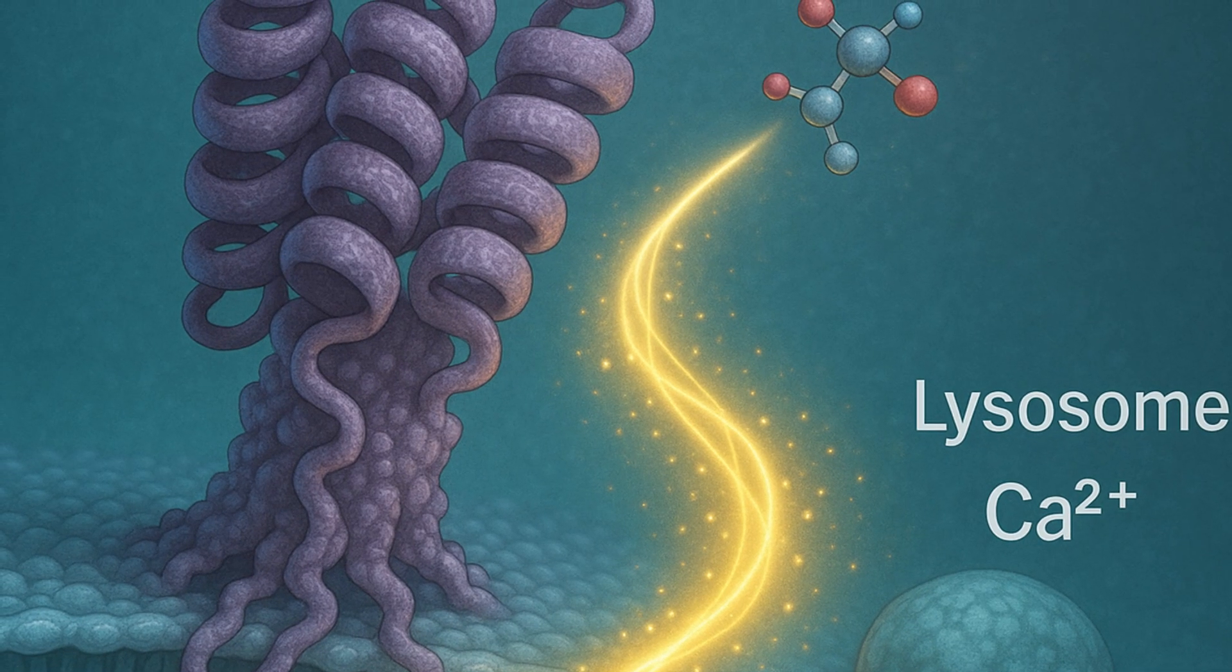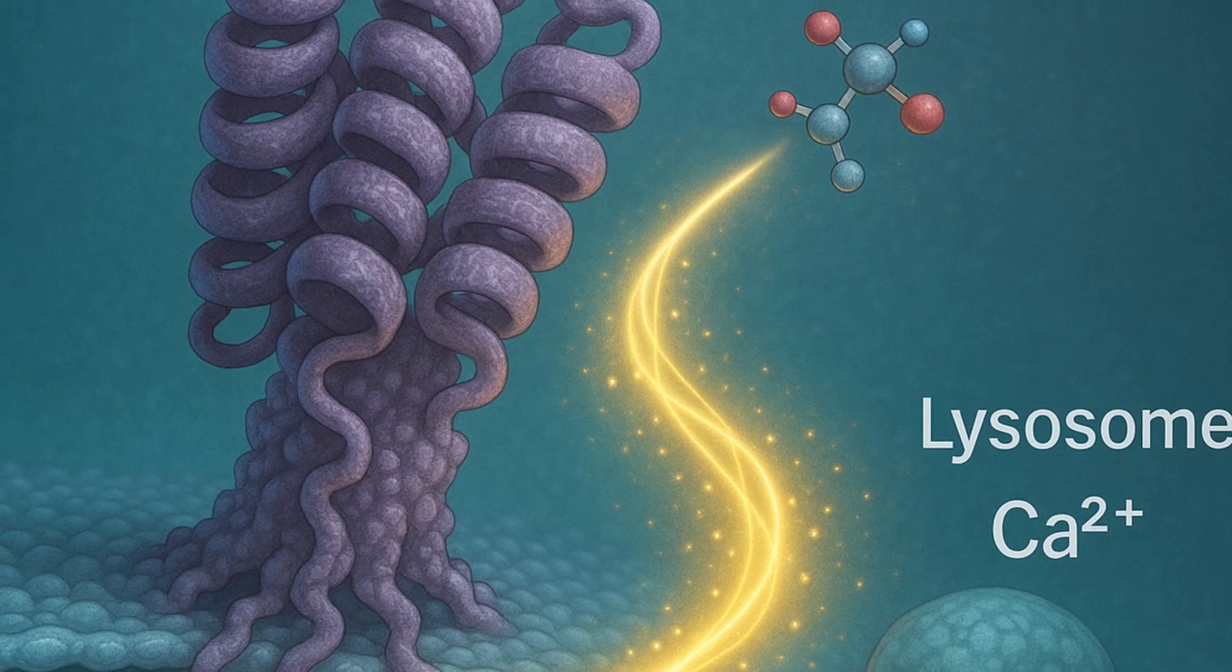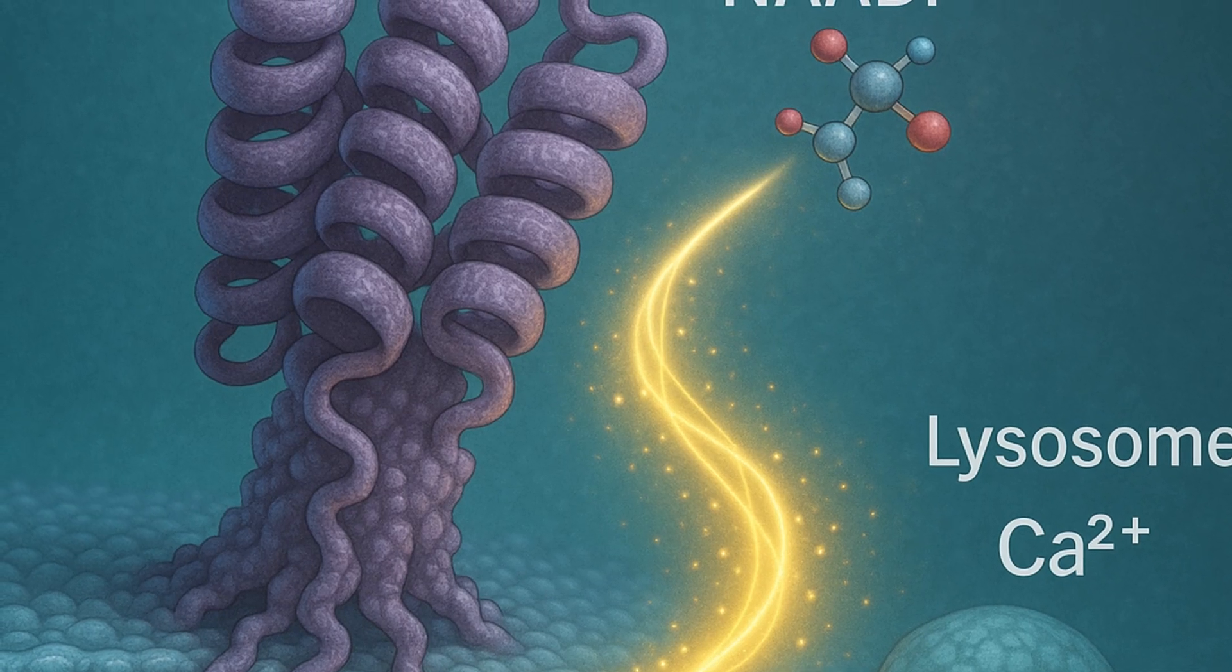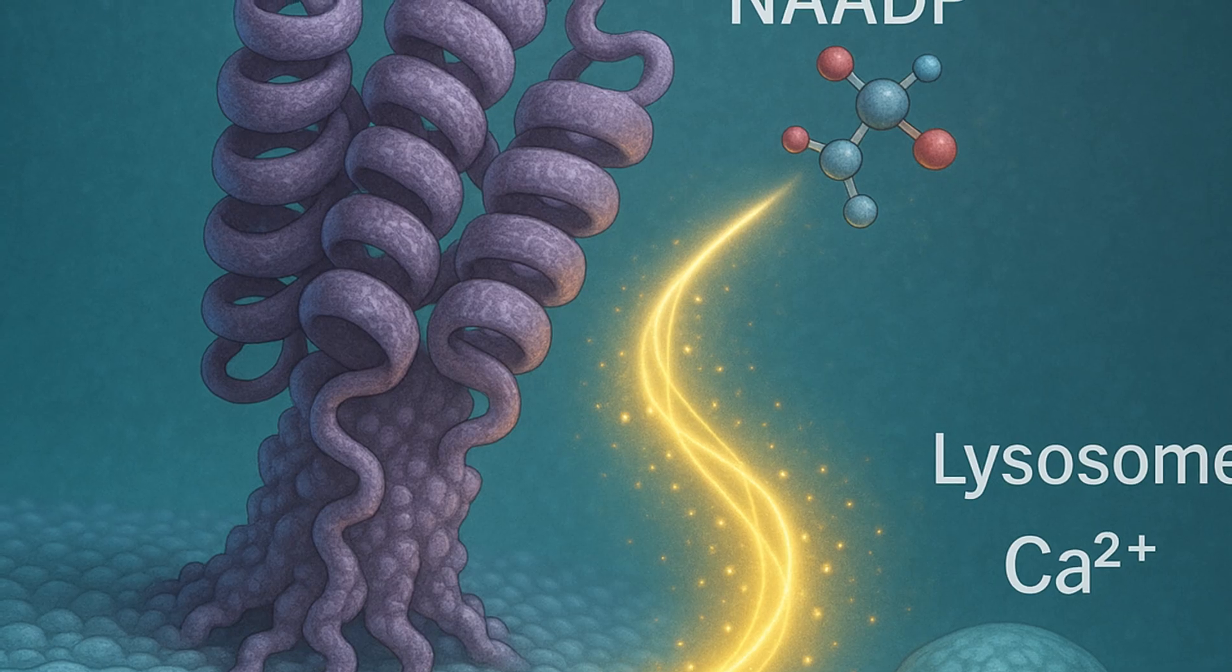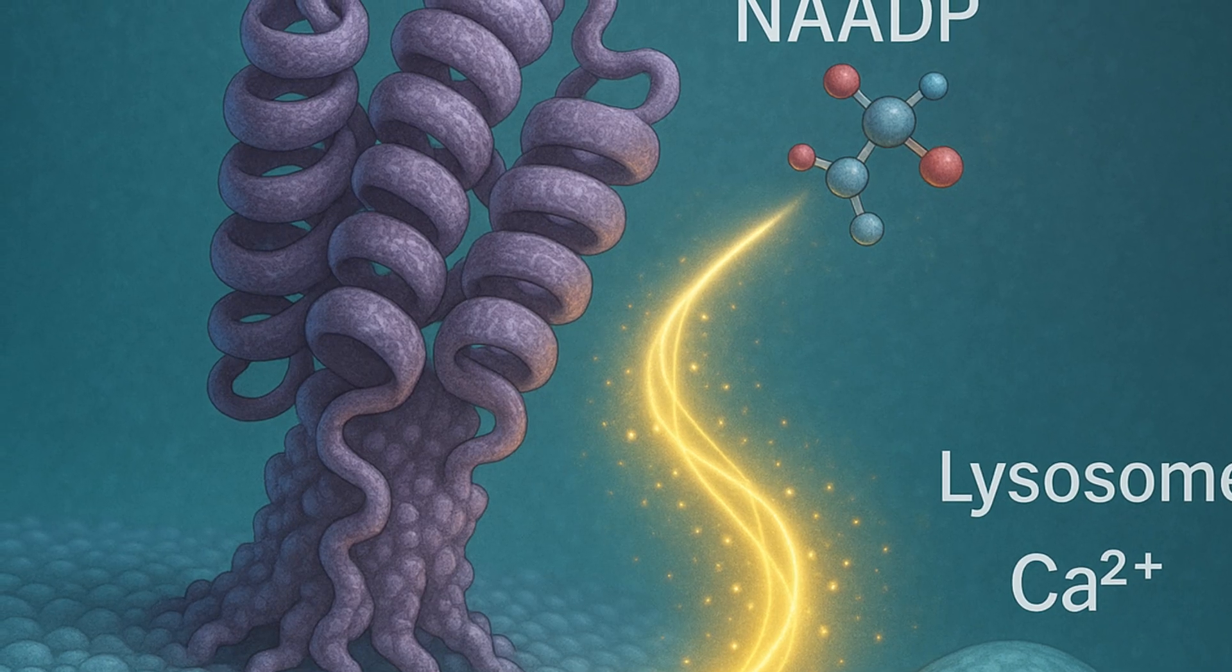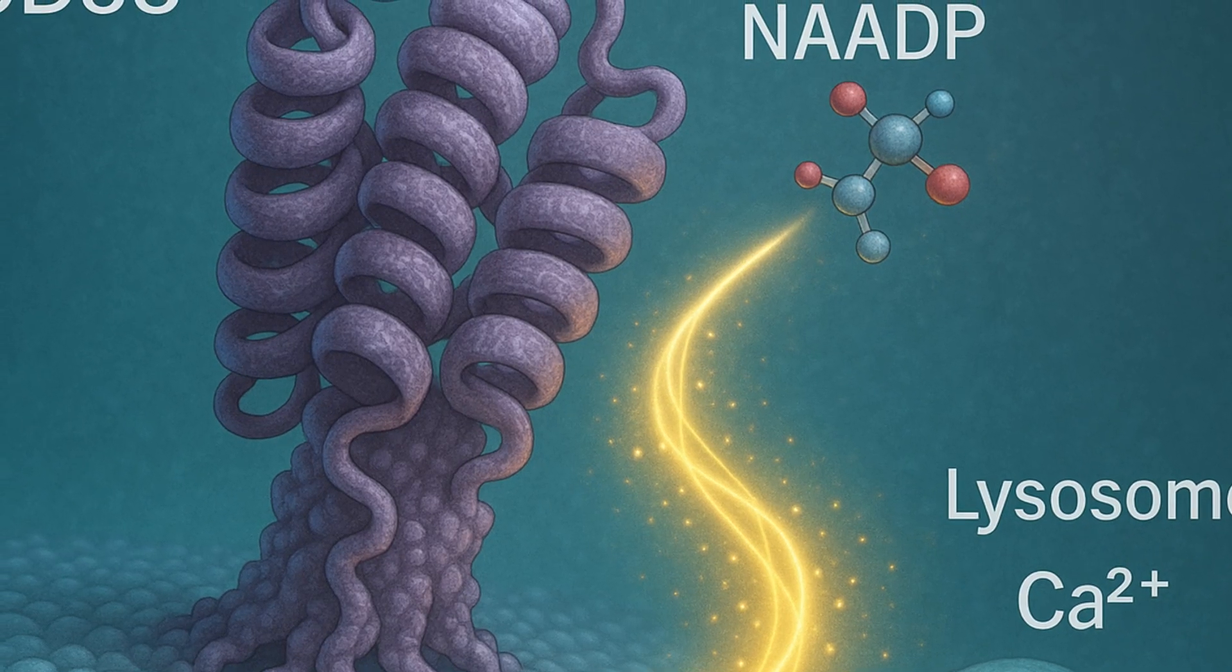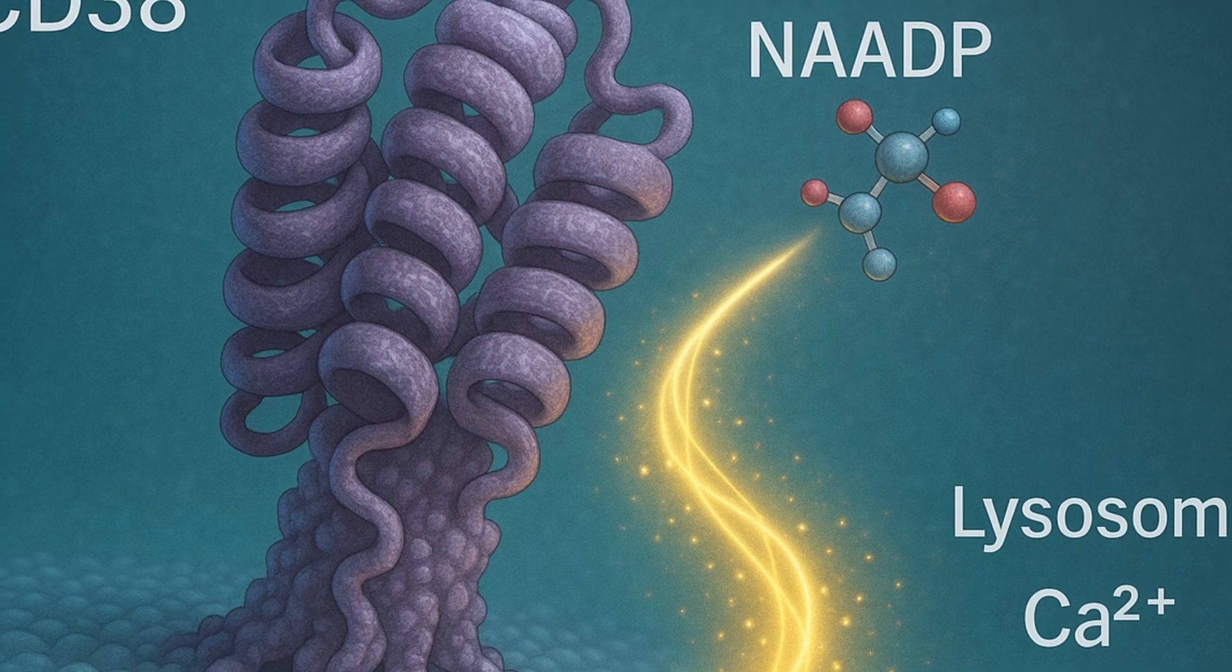Furthermore, niacin-derived NAD supports the activity of sirtuins, NAD-dependent deacetylases that regulate mitochondrial biogenesis, stress resistance, and metabolic homeostasis. SIRT1 and SIRT3, for instance, are essential for antioxidant defense and mitochondrial protein integrity.